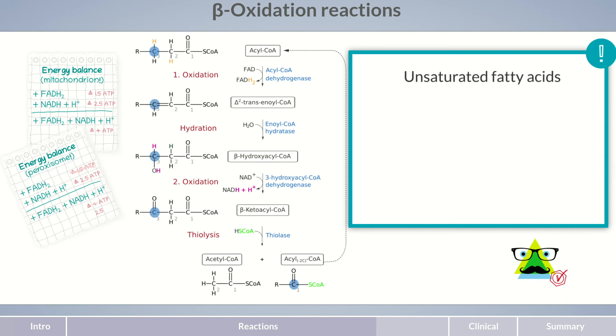For unsaturated fatty acids, the difficulty isn't the general presence of double bonds, but rather that they're usually in cis configuration. Let's go back and refresh our memory. The double bond formed in the first step of beta-oxidation is a trans-double bond. The enzyme enoyl-CoA-hydratase does not use fatty acids with cis double bonds as a substrate because of their conformation.